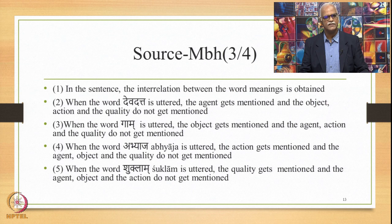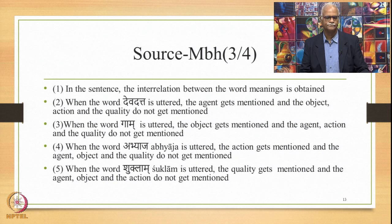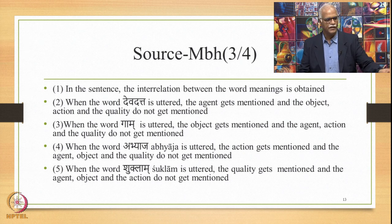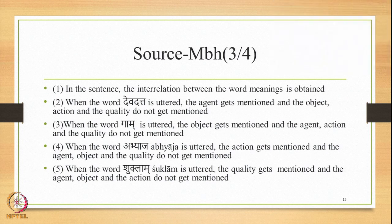The first sentence says: Padarthabhisambandhasya upalabdhir bhavati vakye — in the sentence, the interrelation between the word meanings is obtained. That is explained hereafter. Namely, when the word Devadatta is uttered, the agent gets mentioned, and the object, action, and quality do not get mentioned. The third sentence means: when the word Gam is uttered, the object gets mentioned, and the agent, action, and quality do not get mentioned.